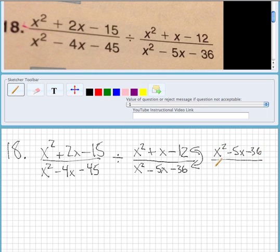The bottom becomes x squared plus x minus 12. And now it's not division, it actually becomes multiplication. So now it's this times this one right here.